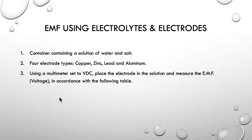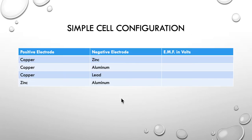So EMF using electrolytes and electrodes. Basically we're going to use a container containing a solution of water and salt. We're going to use four electrode types of copper, zinc, lead and aluminium and using a multimeter set to the volts DC scale we're going to place the electrodes into solution and measure the EMF or the voltage in accordance with the following table.